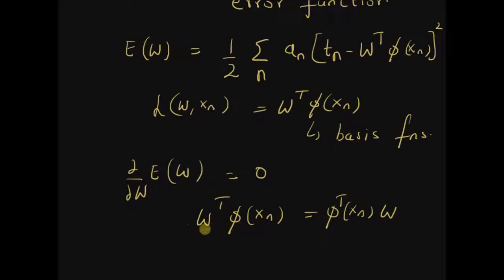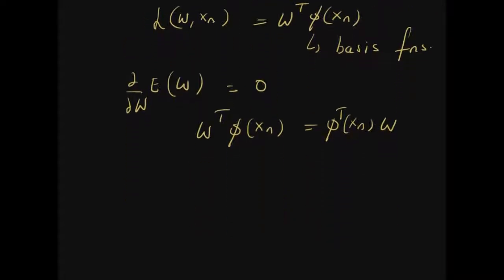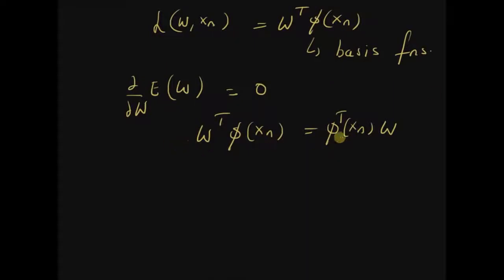Since this is basically a dot product between two vectors, you can rewrite it as w transpose phi(x_n) can be rewritten as phi transpose (x_n) w. That is, they are basically equal to a scalar. So we can rewrite them as follows.